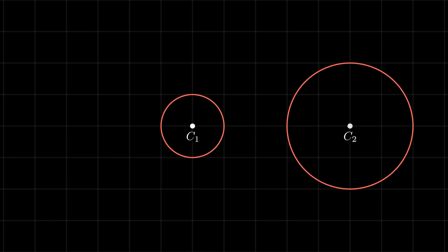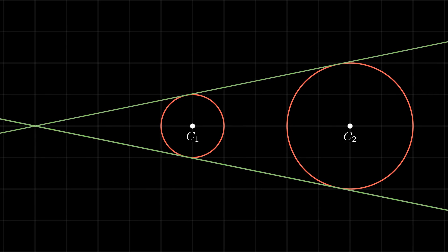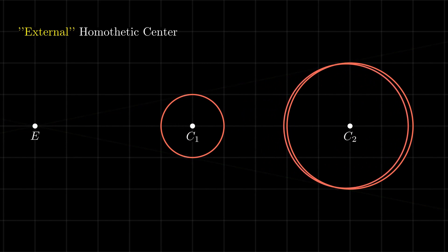Now that we have covered the relevant ideas, let's begin with the simpler problem of constructing a circle mutually tangent to two given circles. Given a pair of circles with centers c1 and c2, we can draw a pair of straight lines that are externally tangent to both given circles. The point of intersection of these two tangent lines, called the external homothetic center, can be seen as a center of scaling that scales one circle to the other.